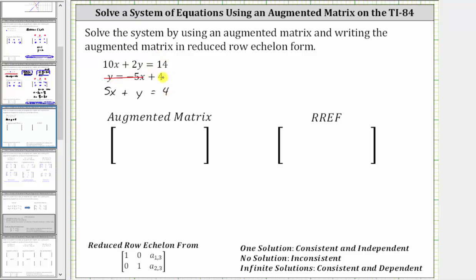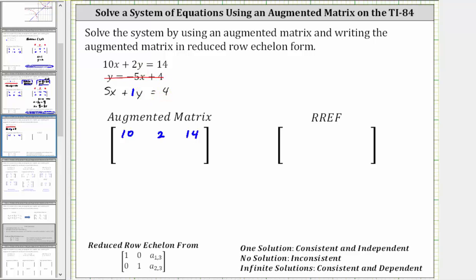Using these two equations, we can now write the augmented matrix. Looking at the first equation, because the coefficient of x is 10, the coefficient of y is 2, and the constant is 14, the first row of the augmented matrix is 10, 2, 14. Now looking at the second equation in standard form, the coefficient of x is 5, the coefficient of y is 1, and the constant term is 4, and therefore the second row of the augmented matrix is 5, 1, 4.